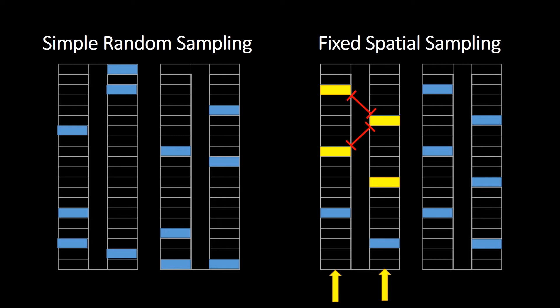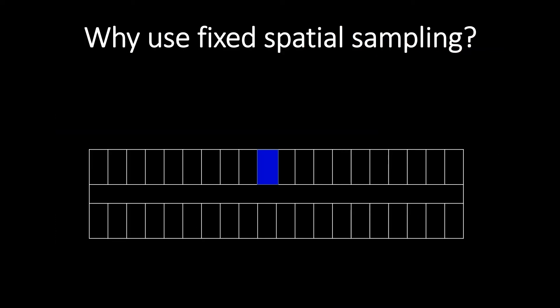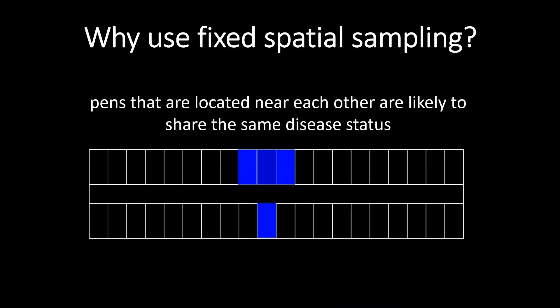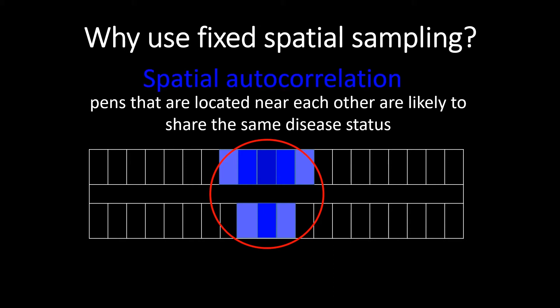To understand why fixed spatial sampling is better than simple random sampling, it is important to look at how disease spreads through a barn. Because infectious diseases are contagious—in other words, move from animal to animal—pens located near each other are likely to share the same disease status. This idea is known as positive spatial autocorrelation.